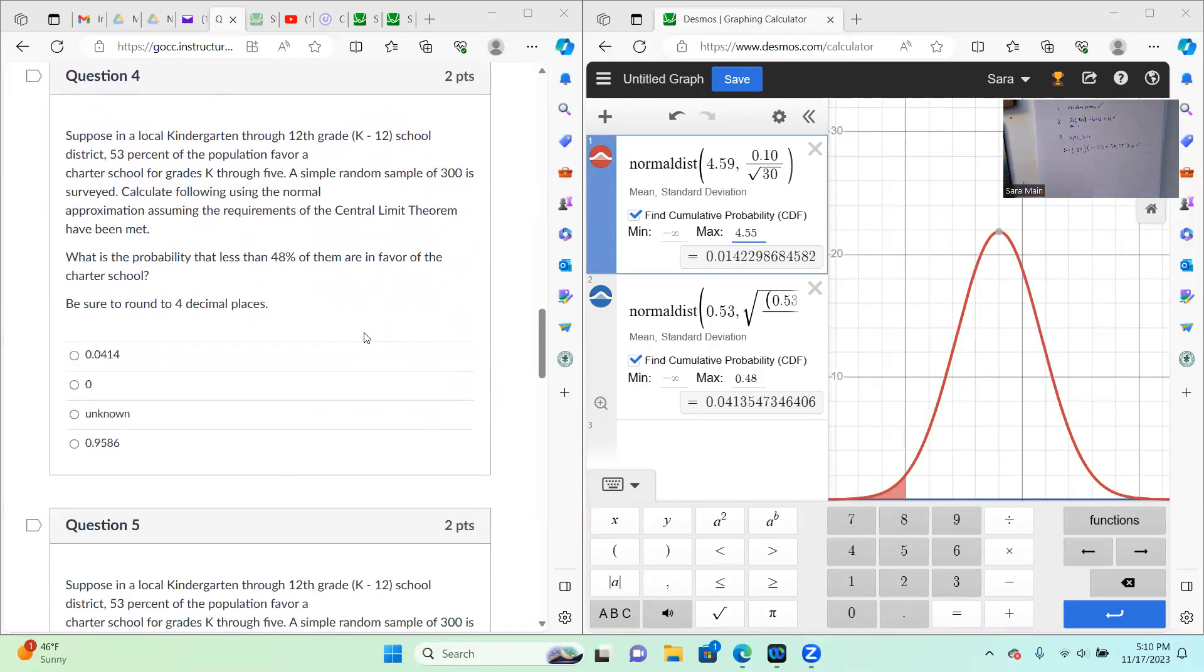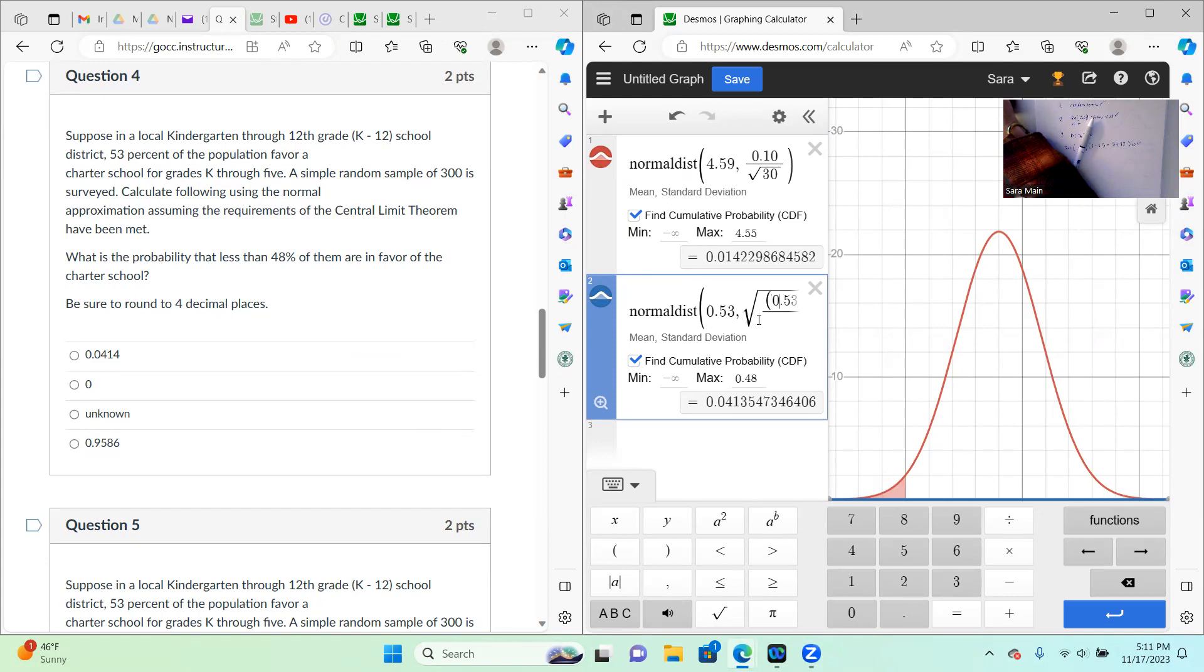So question four, then, is using this scenario for the charter schools. So over in Desmos, you can see I put in 0.53 as my probability. My standard deviation, there isn't one because it's proportions. I have to use the square root, just what we learned in chapter 6.3, so the square root of P times 1 minus P divided by N. And then we want to know what is the probability that less than 48% of them are in favor. So that means 0.48 is going to be my maximum value in this calculation. And that comes out to be 0.0414.